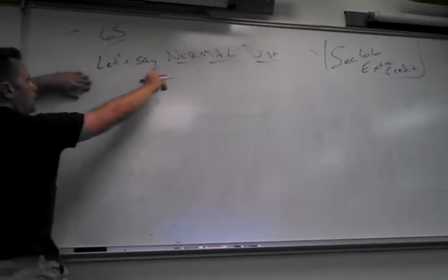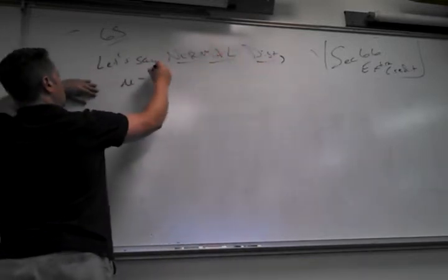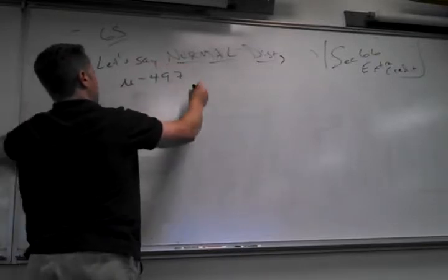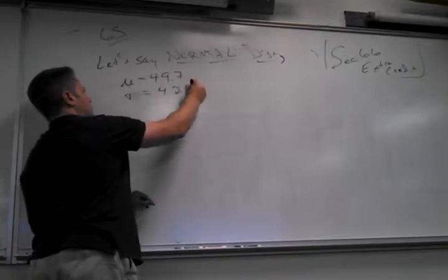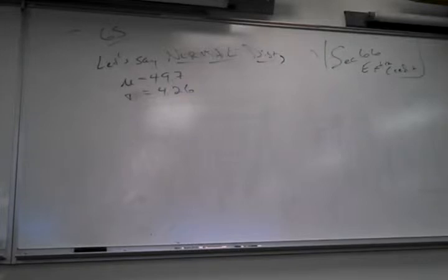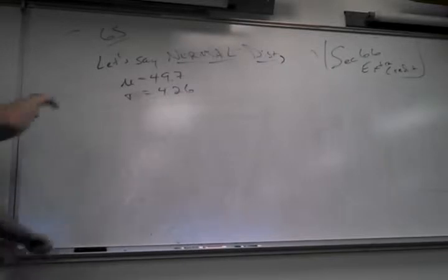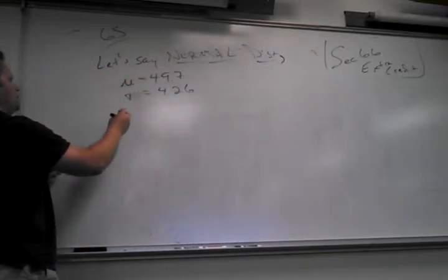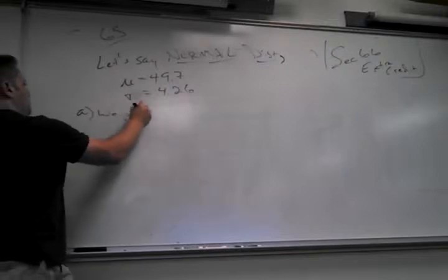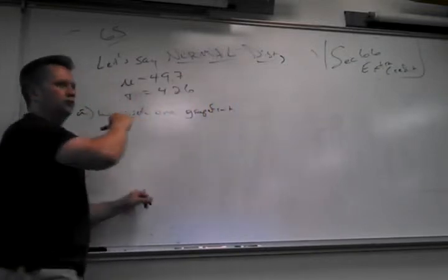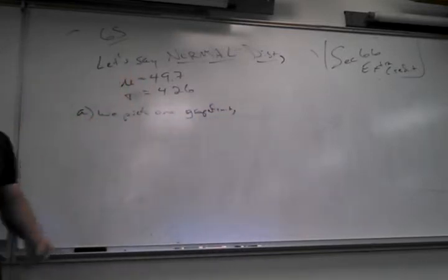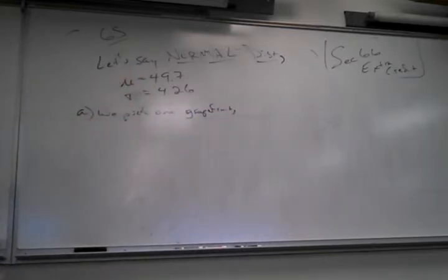We have a normal distribution with mean 49.7 and standard deviation 4.26. Part A: we pick one grapefruit and measure its acidity. What's the probability it's less than 41? Am I allowed to use z-scores? Yes, because it's normal. Do I have to change the standard deviation? No — the two triggers didn't happen. I'm not taking a sample; I'm just taking one thing.